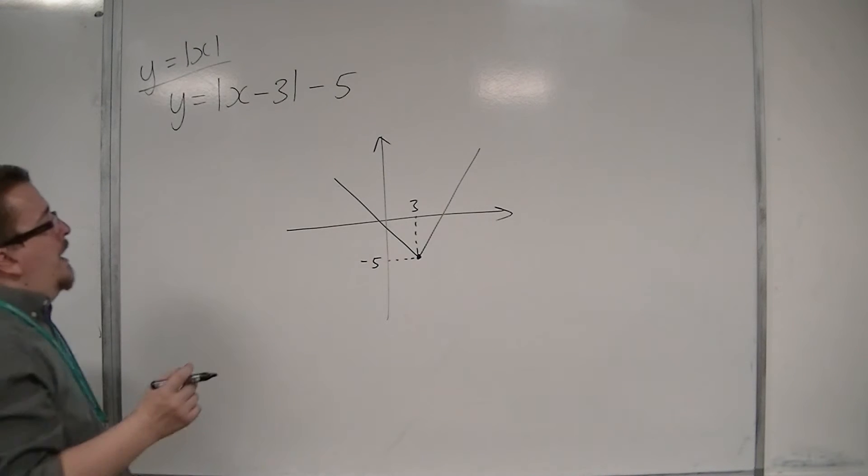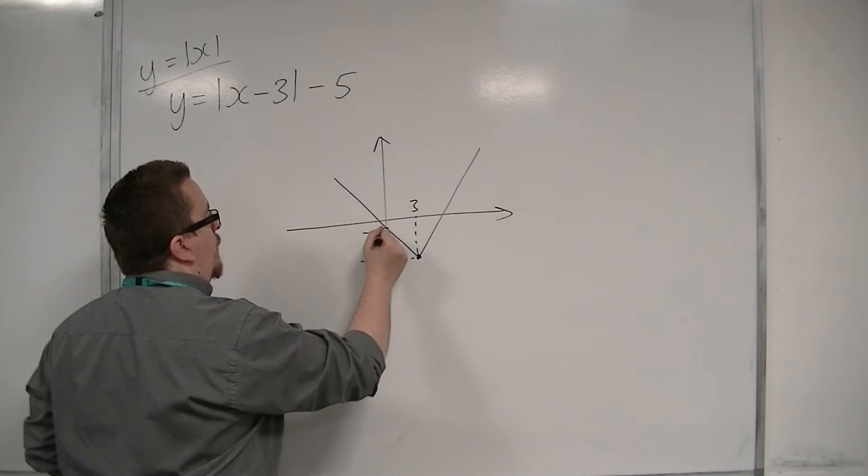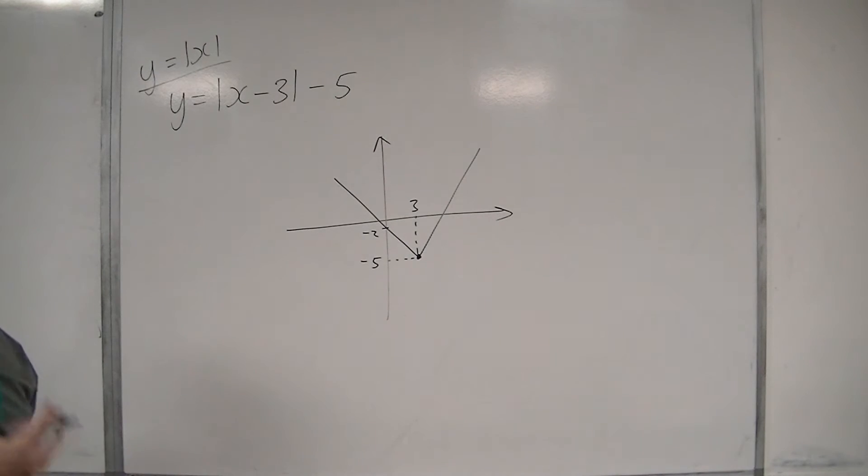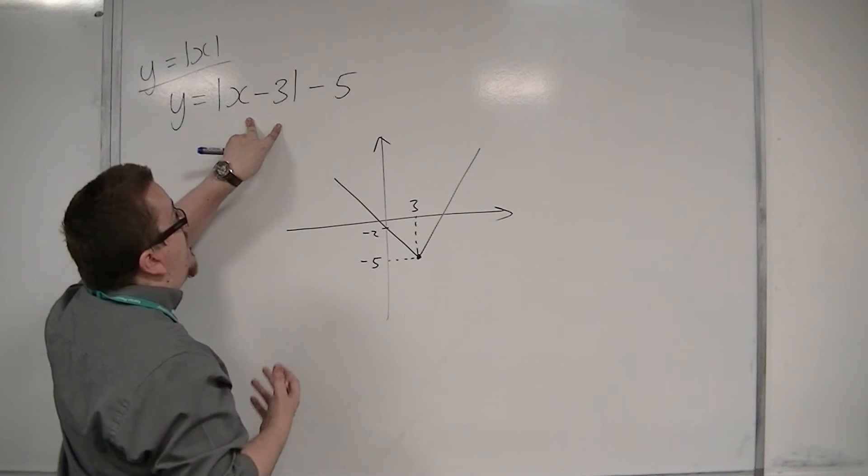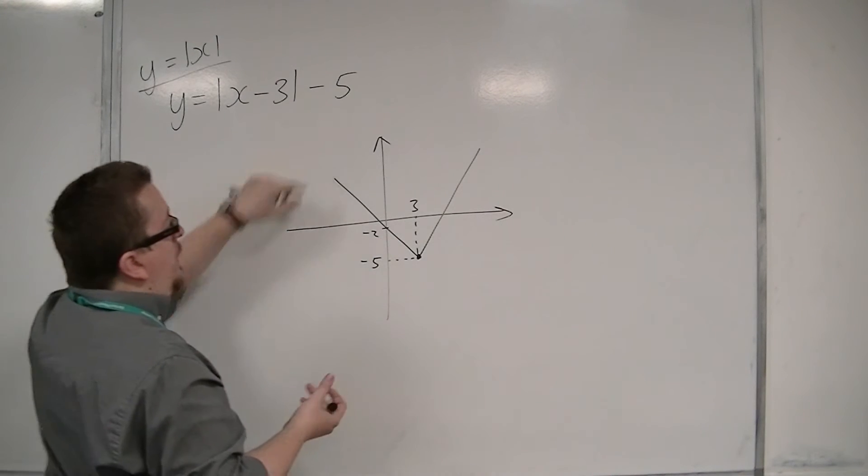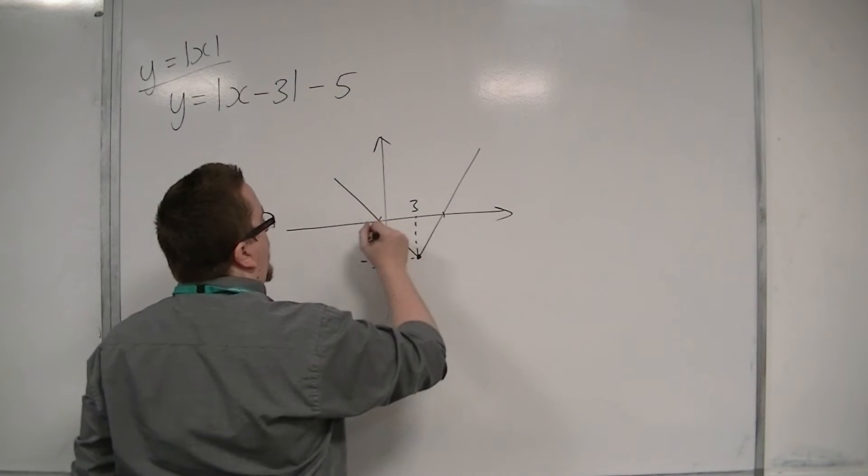We could then look at where this is crossing the y-axis. That's when x is 0, and we get modulus of minus 3, which is 3, take away 5 is minus 2. We could also work out where it crosses the x-axis.